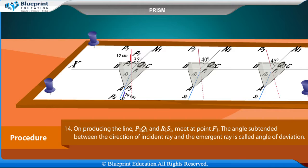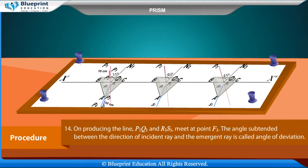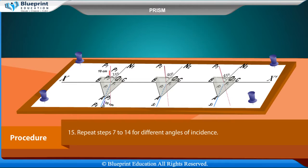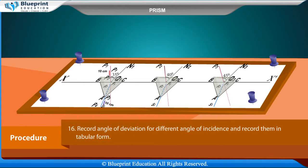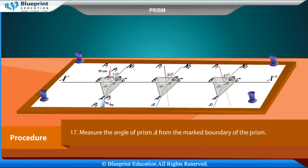The angle subtended between the direction of incident ray and the emergent ray is called angle of deviation. Repeat steps 7 to 14 for different angles of incidence. Record angle of deviation for different angles of incidence and record them in tabular form. Measure the angle of prism A from the marked boundary of the prism.